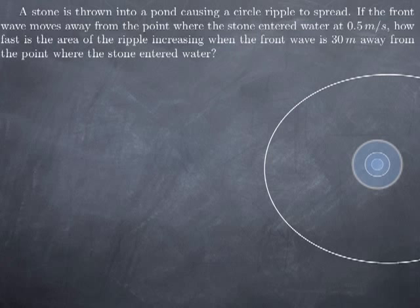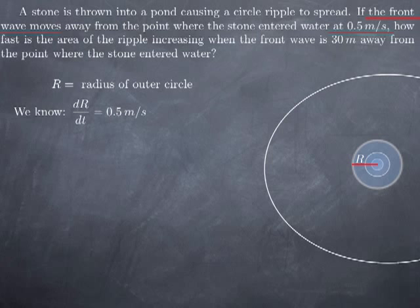Now we need to interpret the text. One piece of information given to us is that the front wave moves at 0.5 meters per second. The front wave means the points that are on the outer circle, so the outer circle moves away at 0.5 mps. This is the rate of change of the position of the front wave, which we can see as the distance to the entry point — in other words, the radius of the outer circle. Because this is a quantity that changes with time, we give it a name. Let's call capital R the radius of the outer circle. This means the rate of change of this radius with respect to time is 0.5 mps.